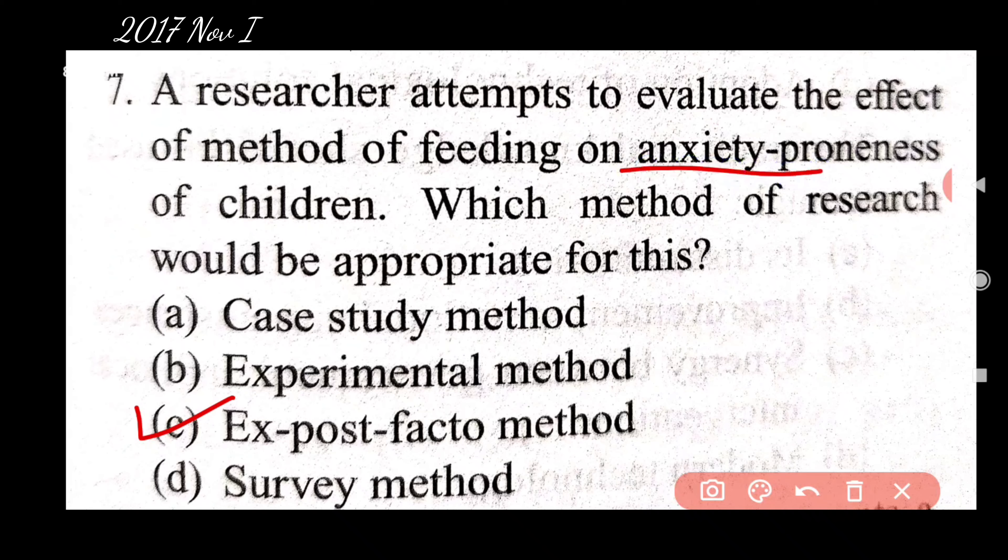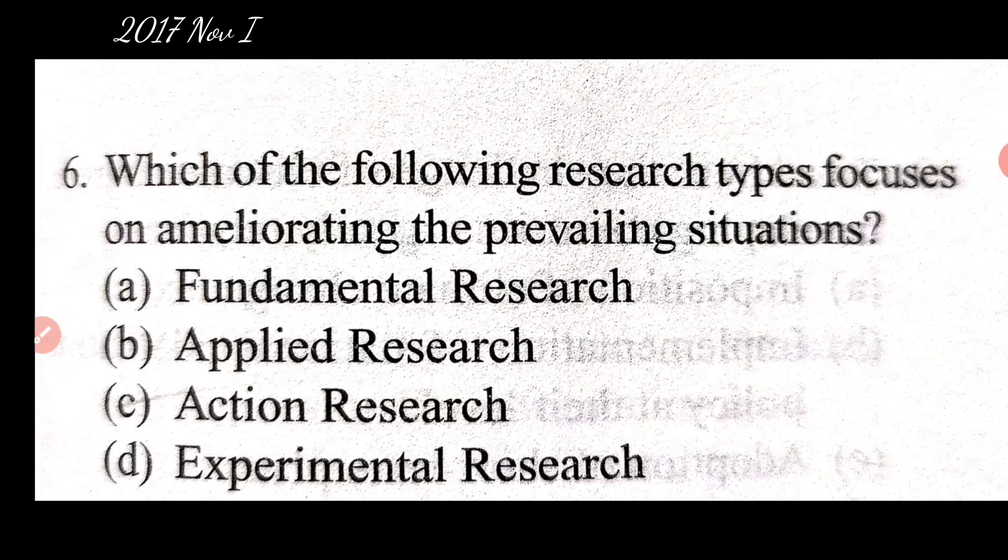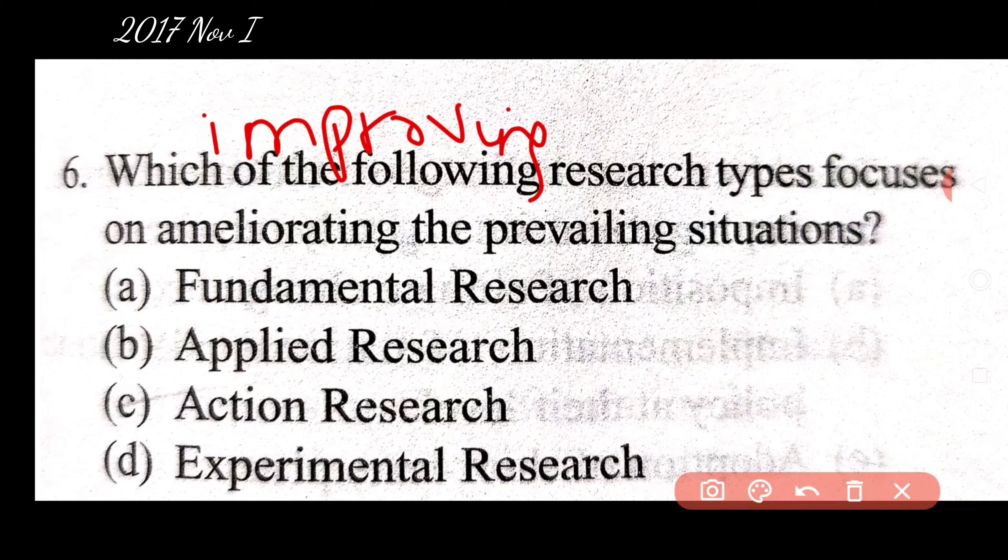Which of the following research types focuses on ameliorating the prevailing situation? Ameliorating means improving, and prevailing means the current situation, the present situation. So what do you think the answer is? The answer is action research. Very easy.